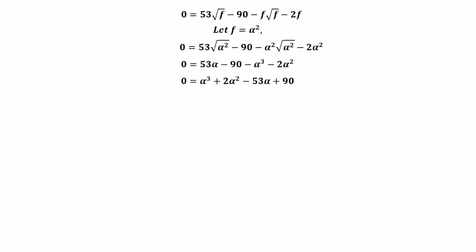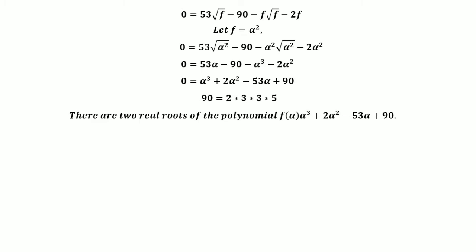To solve this equation, let f equal alpha squared. Substituting gives 0 equals alpha cubed plus 2 alpha squared minus 53 alpha plus 90. To find the real roots, we do prime factorization of the constant term 90: 90 equals 2 times 3 times 3 times 5. Testing possible roots 2, 3, and 5, there are only two real roots of the polynomial: alpha equals 2 and alpha equals 5. So f may be 2 squared equals 4 or 5 squared equals 25.